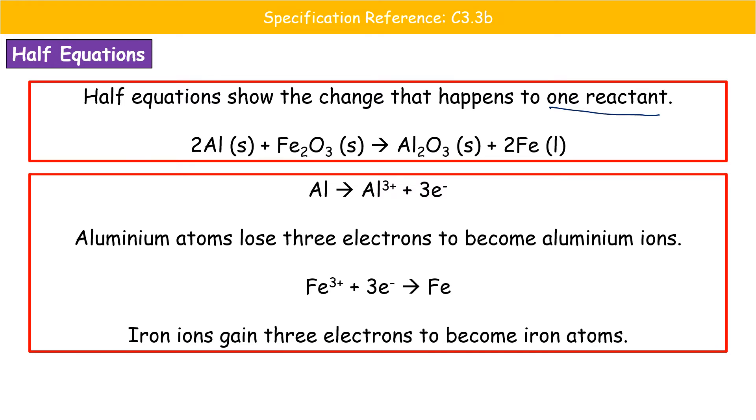If we focus first of all on what happens to the aluminium then. So we start off with aluminium atoms and then we're going to form our little compound here, which is going to be aluminium ions. So aluminium atoms, Al, is going to make our Al3+ ions. And therefore, we also need three electrons. So the aluminium must have lost those three electrons to make the aluminium ion.